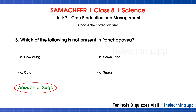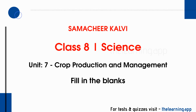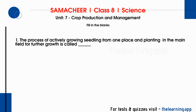Next, fill in the blanks. First question: the process of actively growing seedlings from one place and planting in the main field for further growth is called — transplanting.